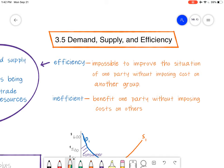Hi, it's Mr. G here today, and we're going to be looking at 3.5 Demand, Supply, and Efficiency. So what does it mean by efficiency? We've learned about demand and supply, so what does it mean by efficiency?